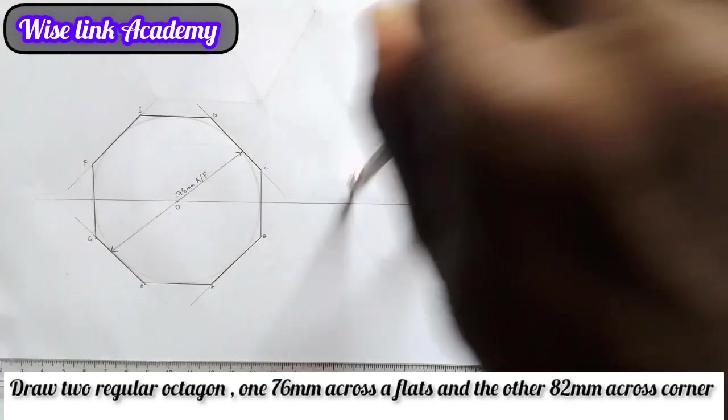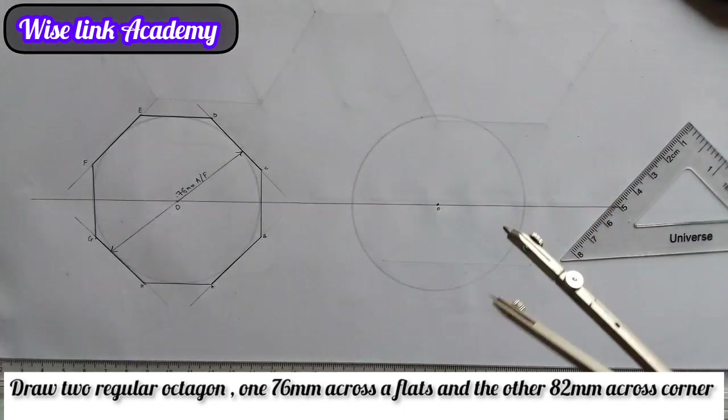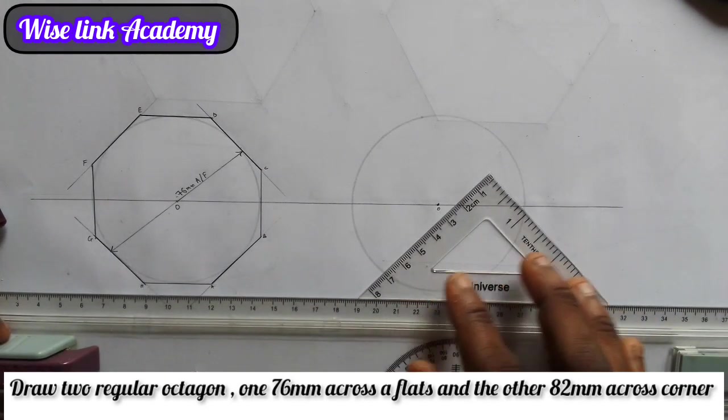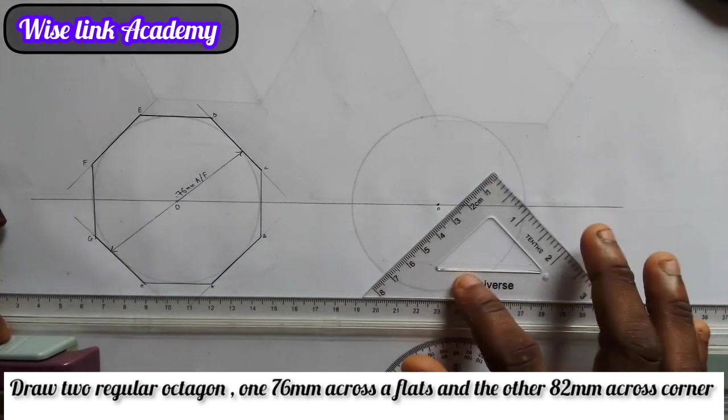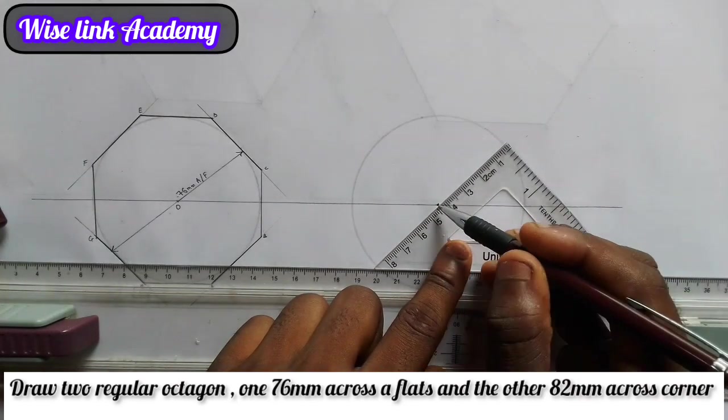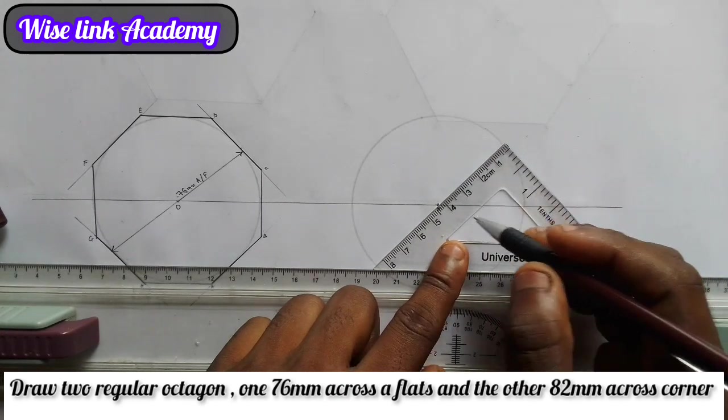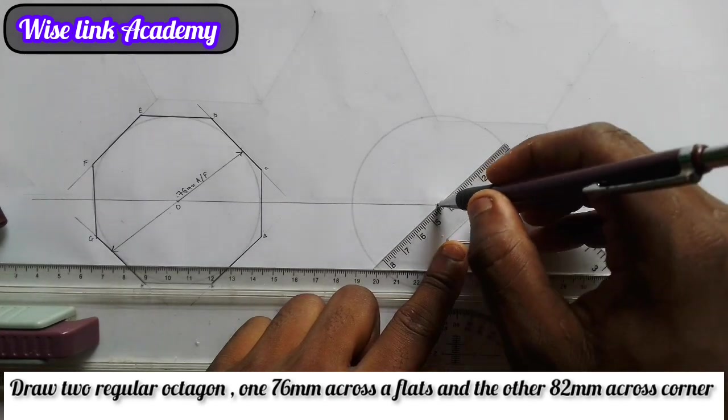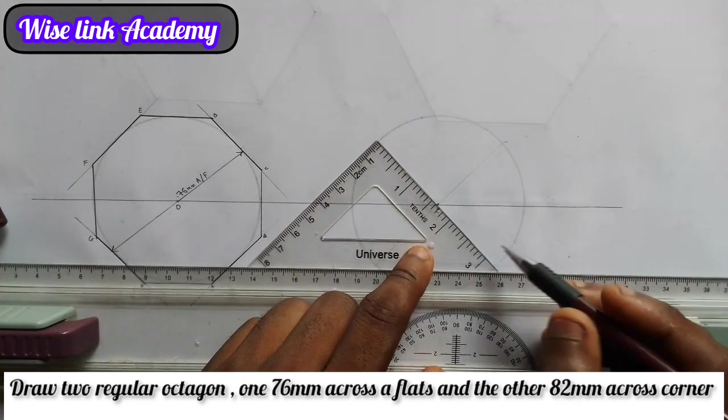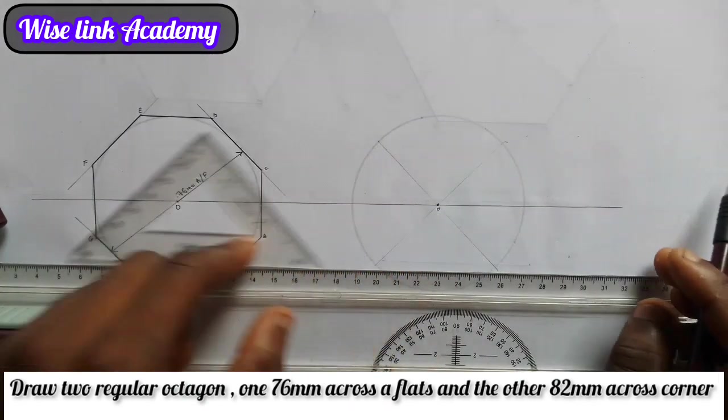I'm told to construct across corner. Now I'll take my set square, this one here this way. I'll take it and make sure I pass the center here. So I will take it this way and draw a faint line. I have this. Come to this point here, draw a faint line. I have this.